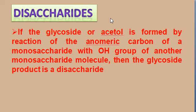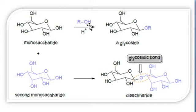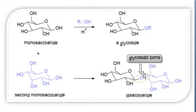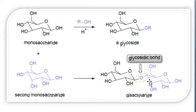If a glycoside is formed by the reaction of the anomeric carbon of one monosaccharide with the OH group of another monosaccharide, then the glycoside product is the disaccharide. A glycoside is formed when any monosaccharide undergoes a reaction with an alcohol. When two monosaccharides react together, water molecules come out through a dehydration reaction and a disaccharide is formed with a glycosidic bond.